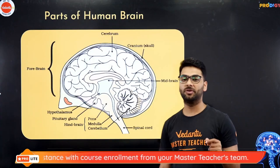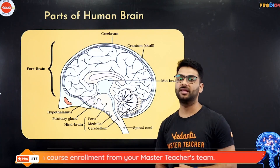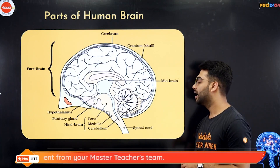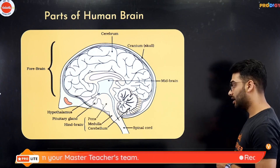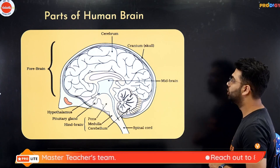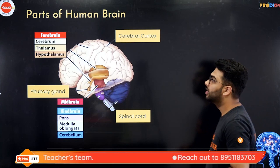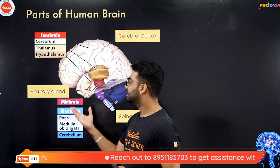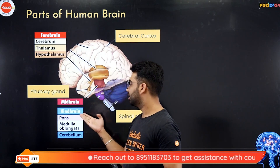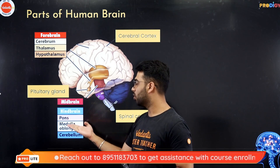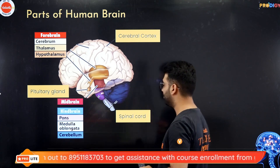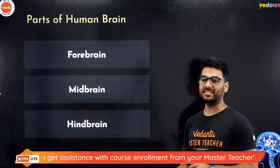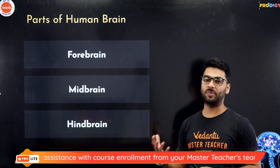The parts of the human brain include the forebrain, midbrain and the hindbrain. Hypothalamus is also a part of the human brain. The forebrain has the cerebrum, thalamus and hypothalamus. The hindbrain has pons, medulla oblongata and the cerebellum, and then we have the spinal cord. Let's explore each part in detail.